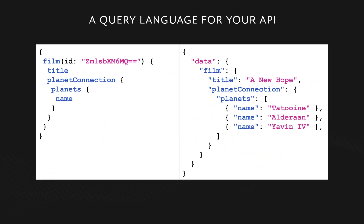Here's an example. The query is on the left, and on the right there are some example results. You can see that the structure of both are very similar. It's a query for a particular film, its title, and related planet names. And the output has exactly that — the film A New Hope, and the planets Tatooine, Alderaan, and Yavin 4. So users get exactly what they asked for, which makes it very flexible and predictable at the same time.